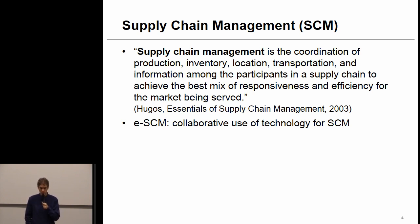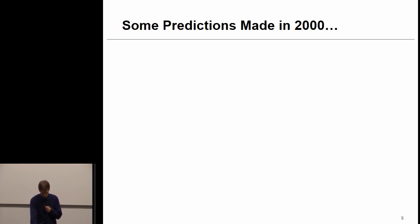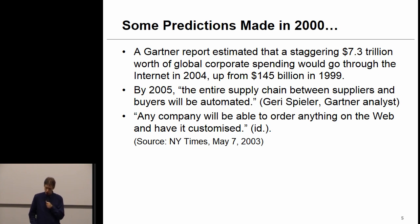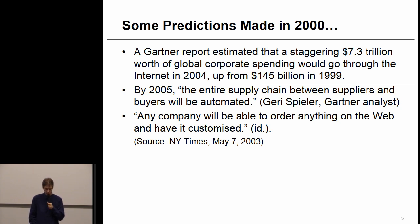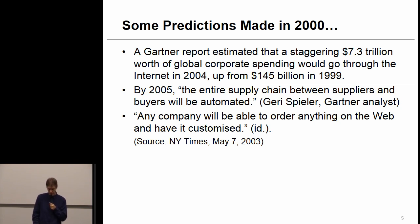E-SCM, electronic supply chain management, is the collaborative use of web-based technology for conducting SCM activities. In the year 2000, lots of predictions were made by companies like Gartner — for example, that $7.3 trillion worth of global corporate spending would go through the internet in 2004, up from $145 billion in 1999. Another prediction was that the entire supply chain between suppliers and buyers would be automated.